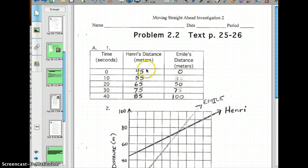Now notice how this table, we're counting by 10 seconds, so Henry's distance is going up 10 meters, because he's going 1 meter per second, or 10 meters per 10 seconds. Emil is going up 25 meters per 10 seconds, which is 2.5 meters per second. So just double check that your table's correct there, and then let's look at the graph.